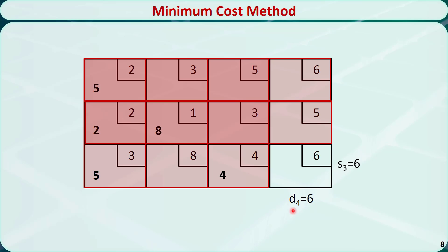We have only one cell left. We just allocate the remaining amount, which is 6, to this cell and cross out this row and this column, removing S3 and D4. This is the final tableau. Remember, this is just a basic feasible solution — it's the starting point, not the final optimal solution to the balanced transportation problem yet.